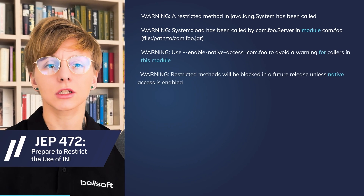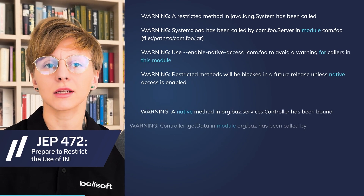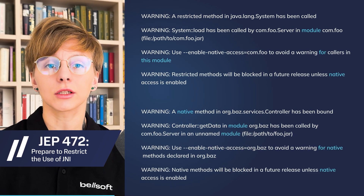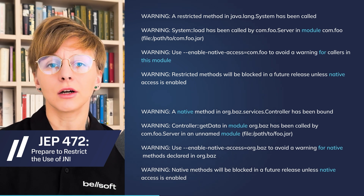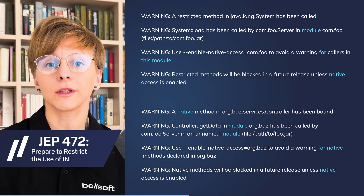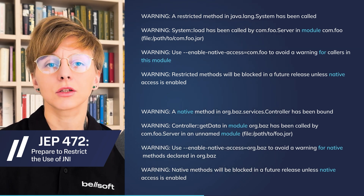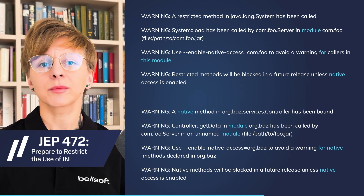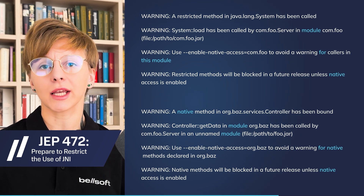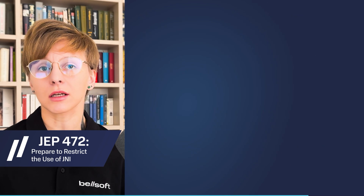JEP 472 makes the JVM issue warnings on the usage of the Java Native Interface and the Foreign Function and Memory API. This feature lays the ground for further restriction of native access to ensure Java's integrity by default. Developers can explicitly enable native access at application startup to avoid warnings and exceptions in the future.